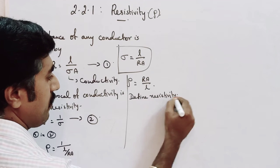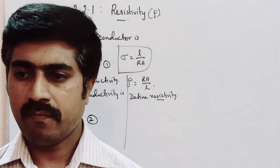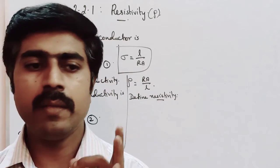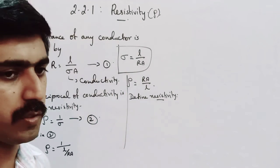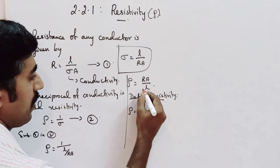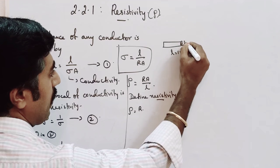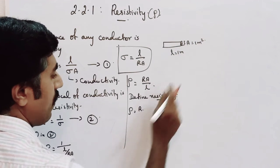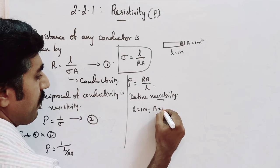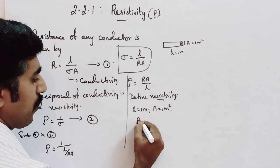Now the question is: define resistivity. From the formula rho equals RA over L, if we give the length as one meter and the area of cross section as one meter square, then substituting these values, L and A cancel appropriately and rho equals R. So resistivity equals resistance when length is one meter and area is one meter square.